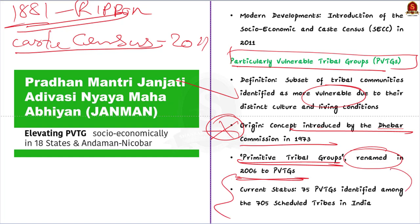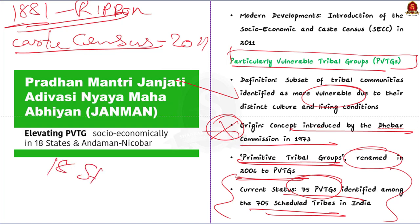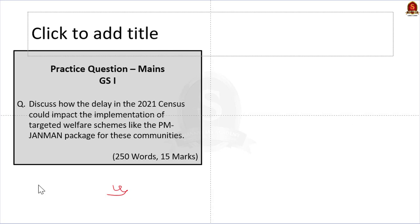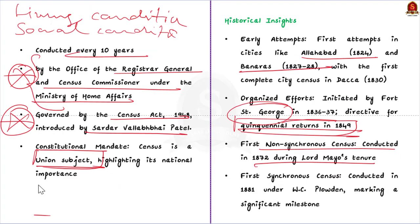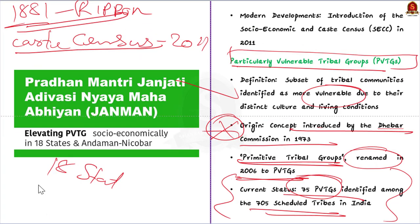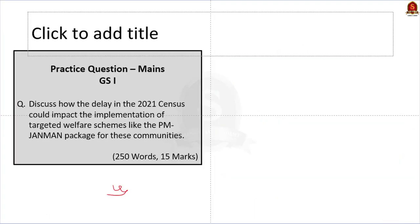As of the last categorization, there are 75 PVTGs identified among 705 Scheduled Tribes across India, spread across 18 states and one union territory. Among the 75 listed PVTGs, the highest number are found in Odisha. That's all we have seen about census, PVTGs, and some important related facts. Let's move on to the next article.